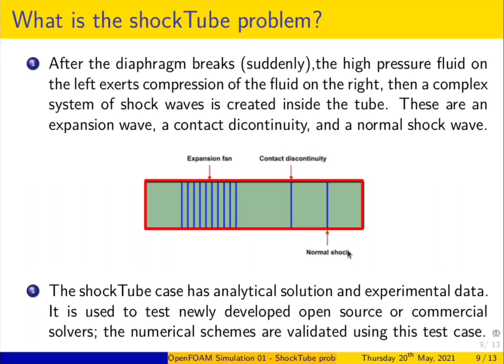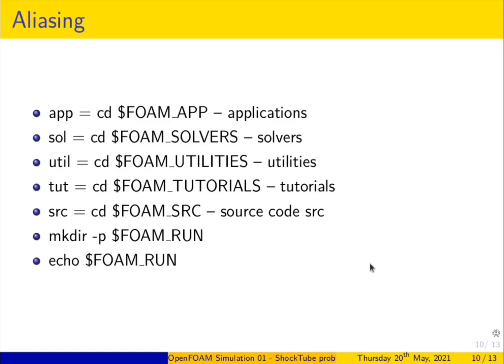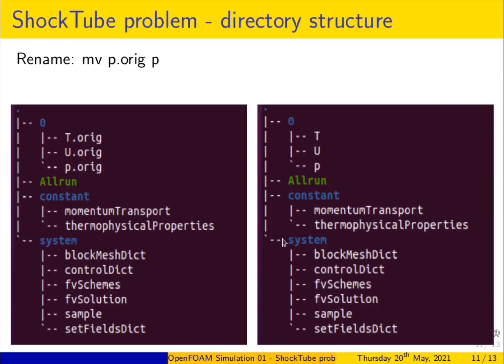We are not necessarily interested in all those applications specifically. But why do we want to solve this problem? The shock tube problem has an analytical solution and plenty of experimental data, so it is mostly used by many people to test newly developed solvers, whether commercial or open-source like OpenFOAM. This is a standard test case and numerical schemes are validated using it. Now let us jump in and start simulating the shock tube by copying the files into the run directory, using some of the aliases that are already set up.